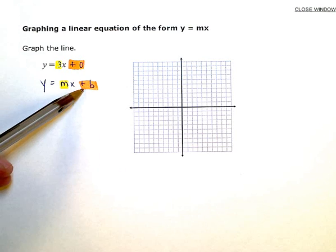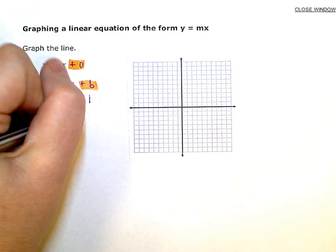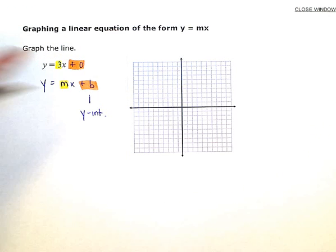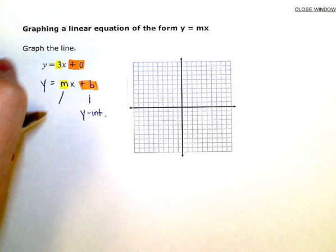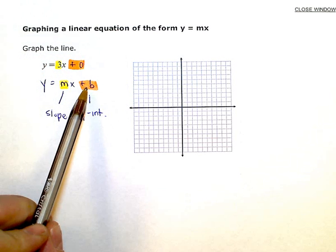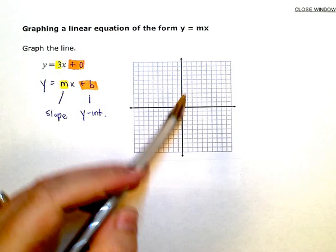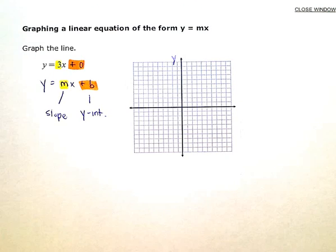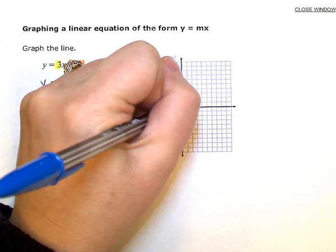Remember, the b value represents the y-intercept. And the m represents the slope of the line. So my y-intercept is 0, which means I'm crossing the y-axis. This one's the y-axis. My line crosses at 0.